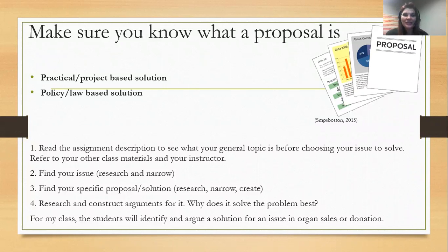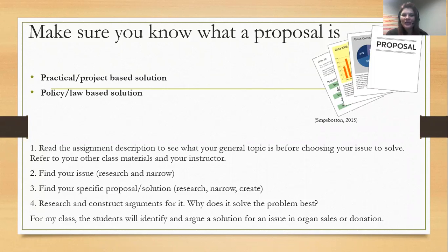For any project or proposal, you want to make sure you know what type you're using. The practical proposal is a project-based solution — something tangible in the real world, similar to a business proposal where something is created, constructed, or a service is provided. A policy or law-based solution is more of a rule or law that is government, administration, or policy-based. Make sure you know your general topic as well as what type of solution you're going for, and read the assignment description to identify those parts.